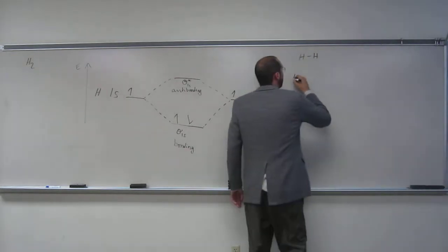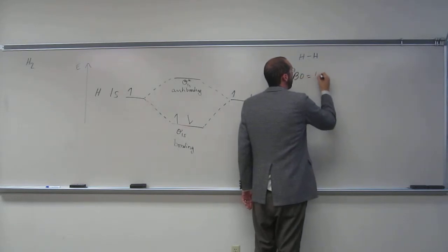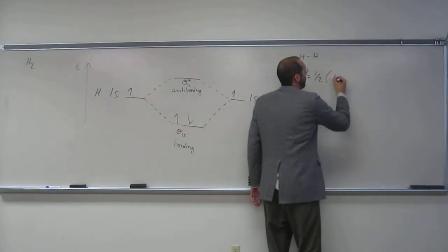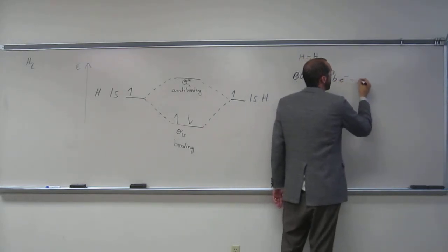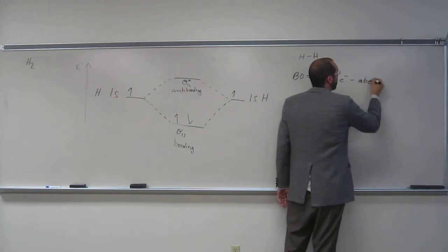So how do we do bond order? Bond order is one-half of the bonding electrons minus the anti-bonding electrons.